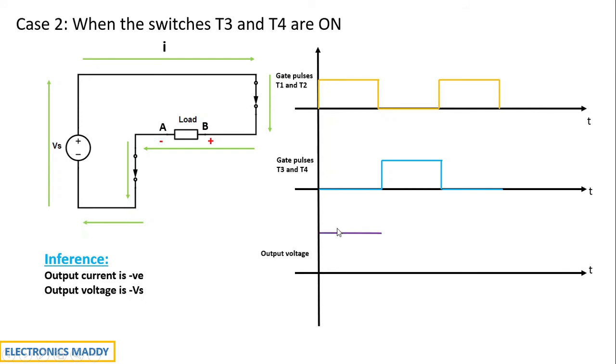So now how does the output voltage and current waveform look like? So it looks like this. So as a whole, when T1 and T2 is turned on, the output voltage was plus Vs. Consequently, once T1 and T2 is turned off and T3 and T4 is turned on, the voltage or current will immediately change to minus Vs according to the inference that we have noted down with respect to case 2. Again, in the next cycle, what happens when T1 and T2 is triggered? The output voltage will be equal to plus Vs.